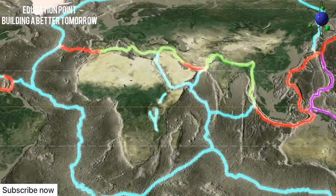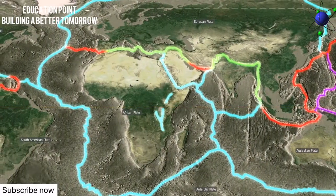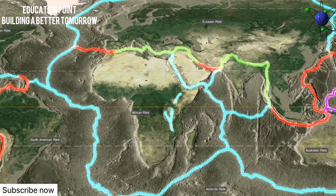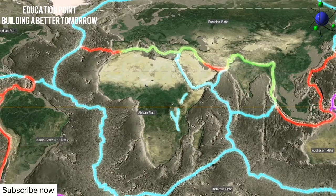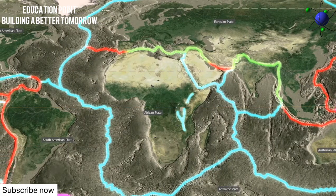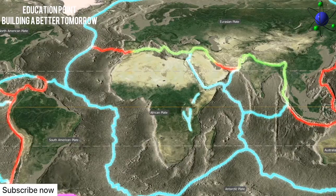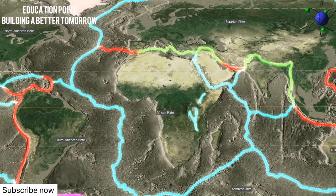The lithosphere is not uniform. It is broken up into tectonic plates of different sizes. Today, we know of seven major tectonic plates and a number of other smaller ones, which all move in relation to each other.